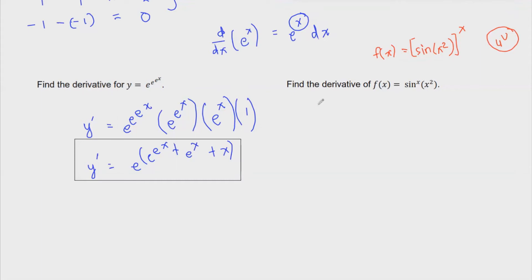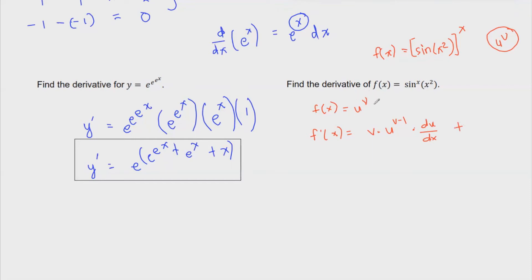When you have f of x equals u to the v, where u and v are expressions of x, the derivative is: first, treat it as a power rule — take v as the exponent, times u raised to v minus one, times du/dx. Then add: treat it as an exponential function where the base is variable — so u to the v times ln of u, times dv/dx. That's the full derivative rule for this case.